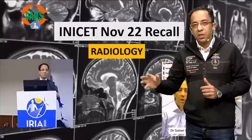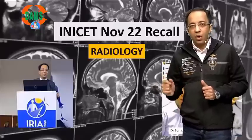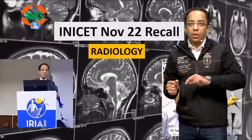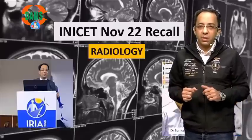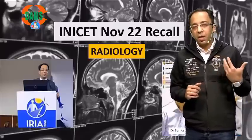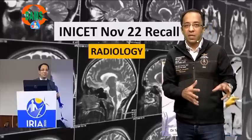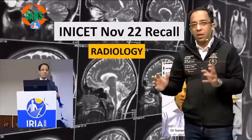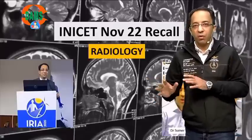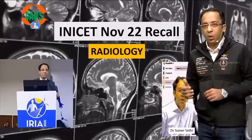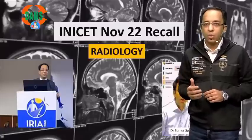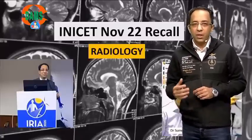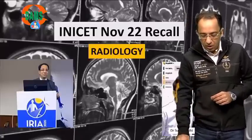We had representation from all subjects including radiology. Importantly, there was still some predominance of first and second year subjects. Looking at older ratios, they were going up to 60-40 — that means first and second year 60%, third and fourth year 40%. But this year it was 55-45: first and second year 55%, third and fourth year 45%, which is good. In this video I will discuss the radiology questions recalled by students and what the answers were.